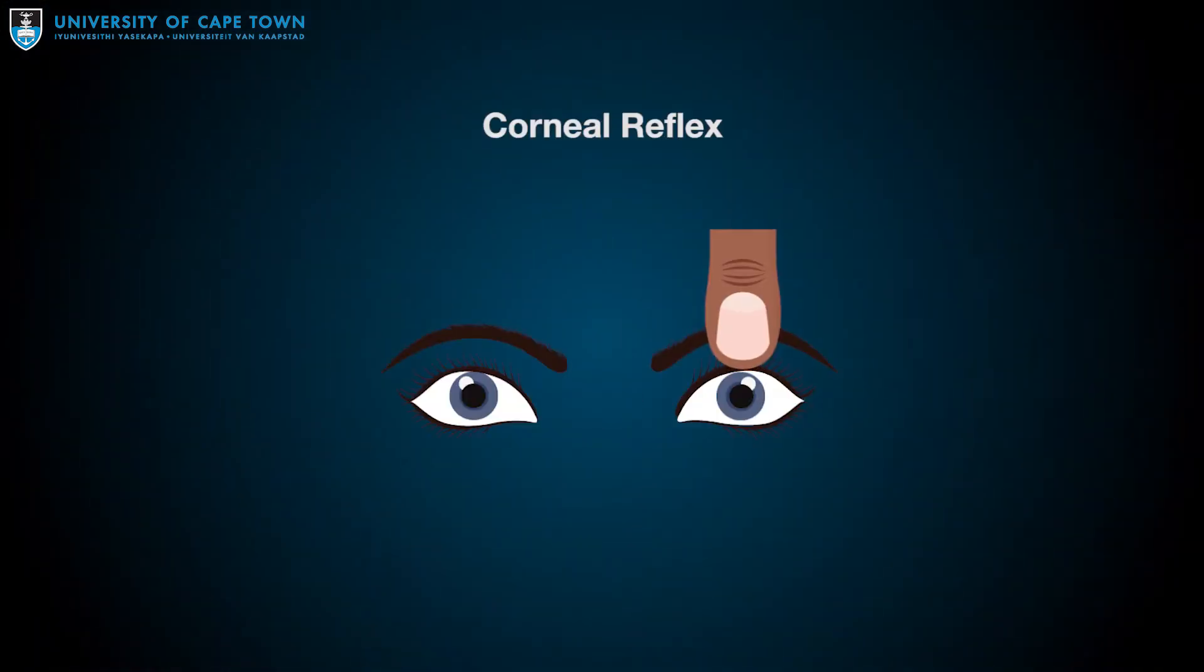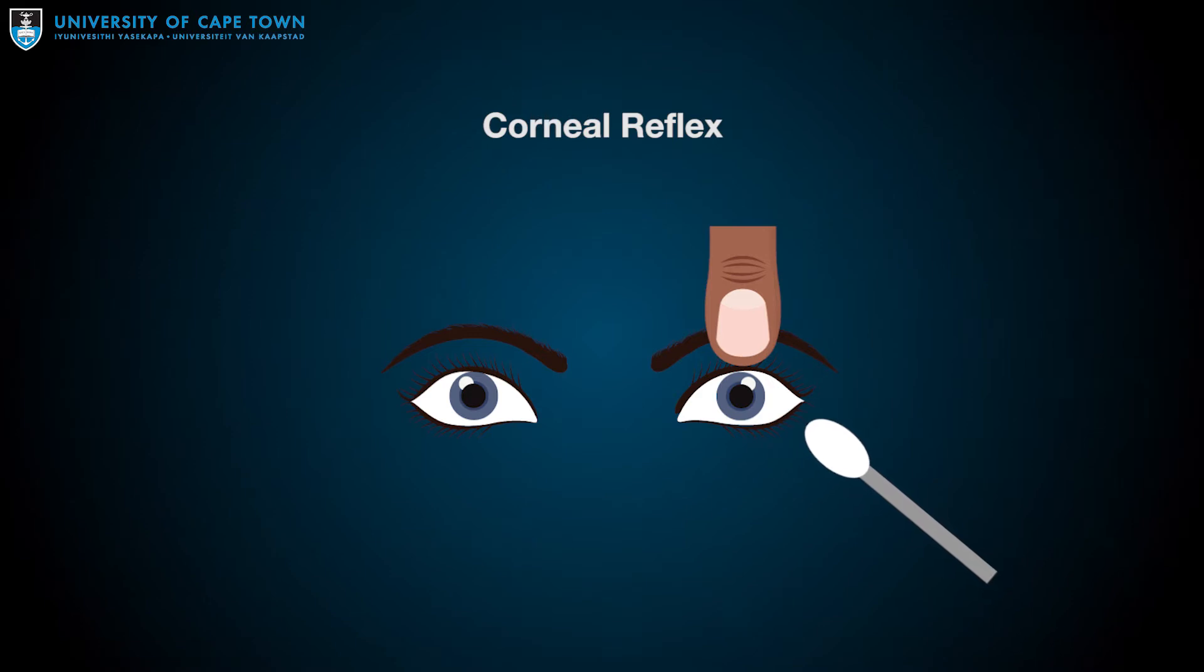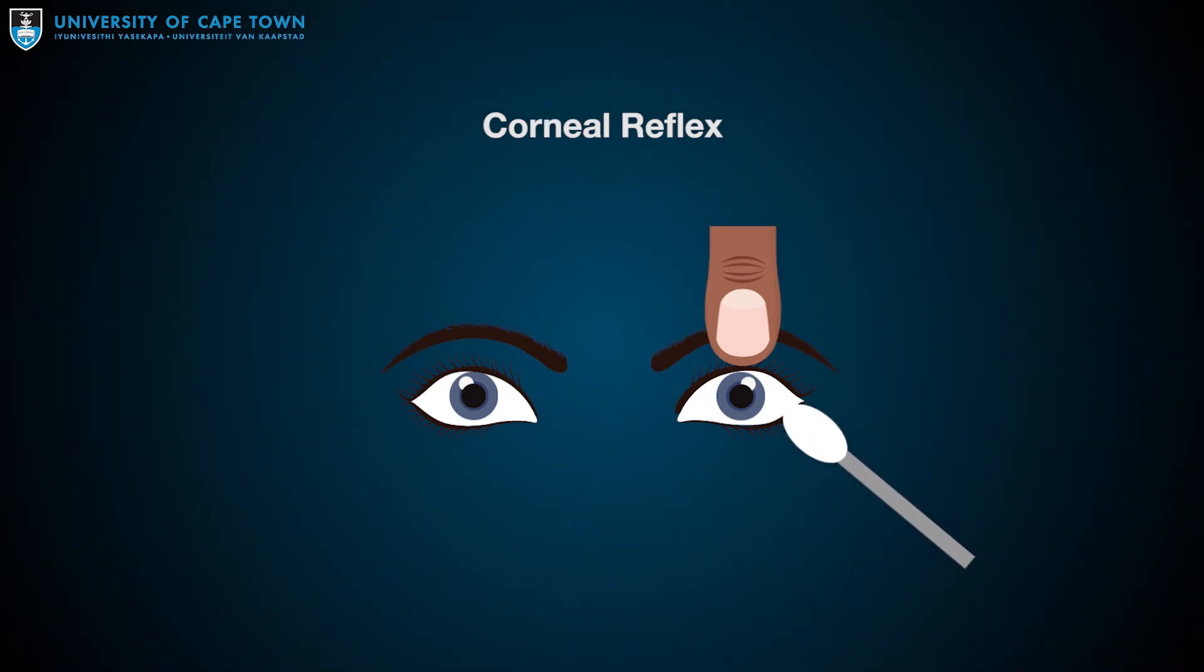Number two: there must be no corneal reflex. The cornea of each eye is touched with a piece of cotton gauze. Care must be taken as the cornea can be easily damaged. If there is no motor or vegetative response observed, proceed with the next brain death test. Blinking or withdrawal is a motor response, and tearing is a vegetative response. If the corneal reflex is seen, stop clinical testing as this precludes a determination of brain death.